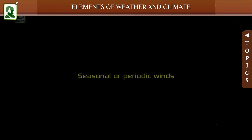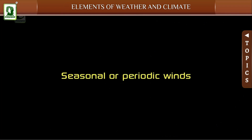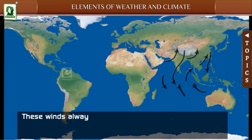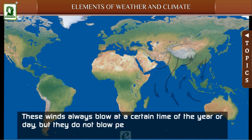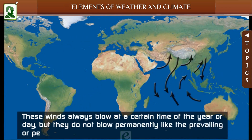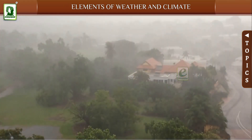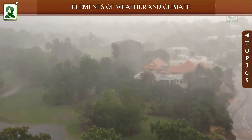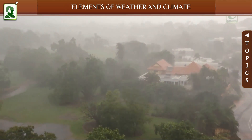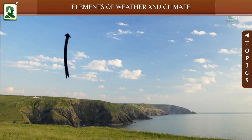Seasonal or periodic winds always blow at a certain time of the year or day, but they do not blow permanently like prevailing winds. Monsoon winds in India are the best example of seasonal winds. Land and sea breezes are also periodic winds.